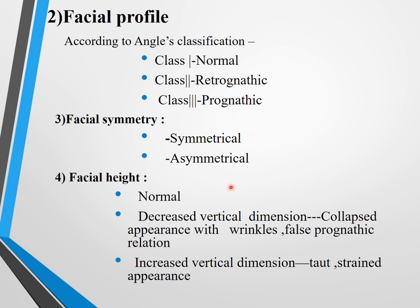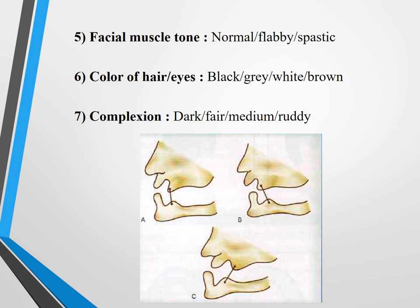Facial height can be normal, decreased, or increased vertical dimension. A collapsed appearance indicates decreased vertical dimension — common in edentulous patients. Increased vertical dimension appears as stretched and strained, producing long faces. Facial muscle tone can be normal, flabby, or spastic. Complexion and eye color help in teeth selection, while facial muscles help appreciate jaw relations.